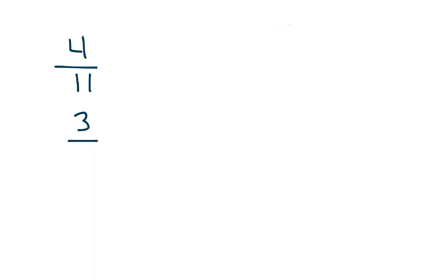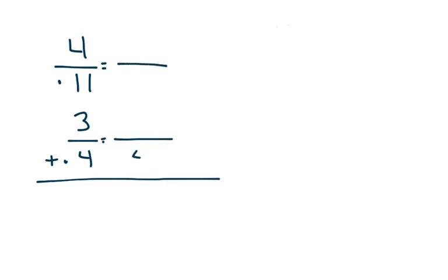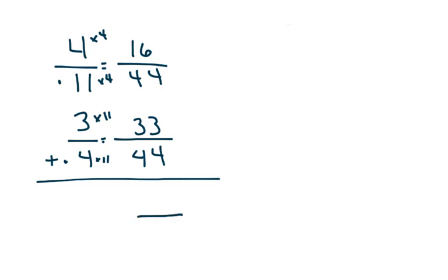For another one, let's do four-elevenths plus three-fourths. The least common is 44 — the easy way is you take both bottom numbers, the four and the eleven, and multiply them together to get 44. Now you need to find the new top numbers: eleven times four gave me 44, so whatever you do at the bottom you do at the top, so four times four is 16. Then four times eleven was 44, so three times eleven is 33. Now you're going to add the top numbers: 16 and 33 — six and three is nine, one and three is four — so I have 49 over 44.